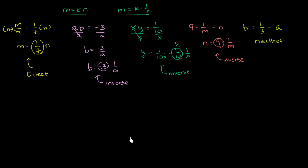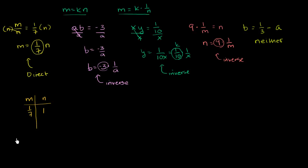To make that 100% clear, let's look at two of these examples. In direct variation, if you scale up one variable, you scale up the other variable by the same amount. With m and n: when n is 1, m is 1/7; and when n is 7, m is 1. So if n is scaled up by 7, then m is also scaled up by 7. When you scale one variable up by some amount, you have to scale the other by the same amount — this is direct variation.